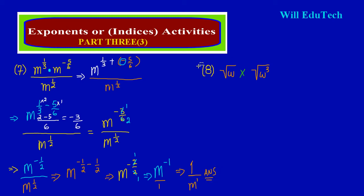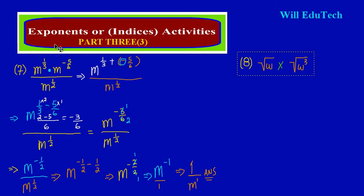Now let's look at question 8. In question 8 we have the square root of W multiplying the square root of W to the third power. Remember when you don't see a number in the root, it's as if you have an invisible 2 there. Remember the fractional rule — if you're not sure you can go back and watch property 6 of exponents, where we talk about the fractional rule: when a base is written in root form, it can also be written as a fractional index.